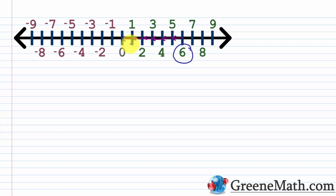Now, similarly, if we looked at negative six, you'd find that it has the exact same absolute value. If we start at negative six and go one, two, three, four, five, six units to the right to get to zero. So this leads us to an important concept: two numbers that lie on the opposite side of the number line with the same absolute value are known as opposites.